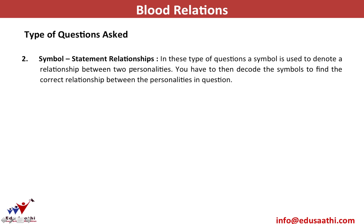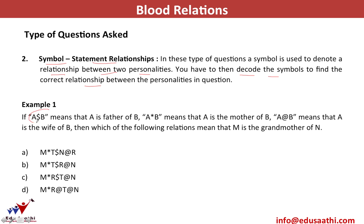The second type of question uses symbol-statement relationships. A symbol denotes a relationship between two people; you decode the symbols to find the correct relationship. For example: if A dollar B means A is the father of B, A star B means A is the mother of B, and A @ B means A is the wife of B, then which of the following means M is the grandmother of N?